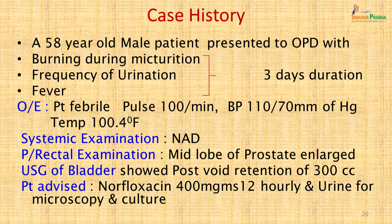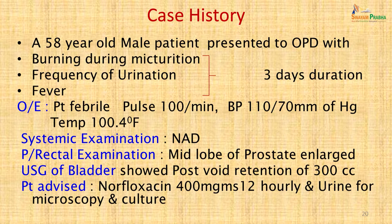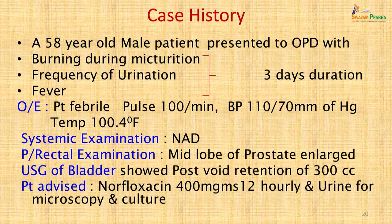In the OPD, a 58-year-old male presented with burning micturition, frequency of urination and fever of three days duration. On examination, the patient was febrile with pulse 100 per minute, blood pressure 110/70 mmHg and temperature 100.4°F. On per-rectal examination there was mid-lobe enlargement of the prostate. USG showed post-void retention of 300 cc. The patient was advised norfloxacin 400 mg 12-hourly and urine was sent for microscopy and culture.